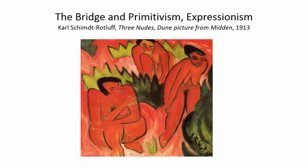The Brücke, or Bridge, and primitivism gave rise to German Expressionism. Three Nudes by Karl Schmidt-Rottluff is a good example. The Brücke was formed in Dresden around 1905. The artists that belonged to it did not like complete abstraction — they showed figurative subject matter, but highly stylised and very primitive looking, almost as if children had painted them. The colours had to be abrasive, and they did not want to go into complete abstraction.